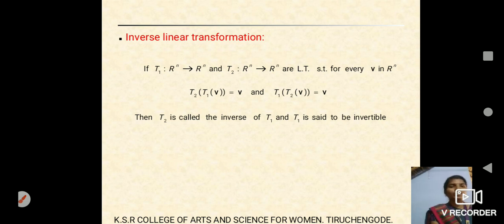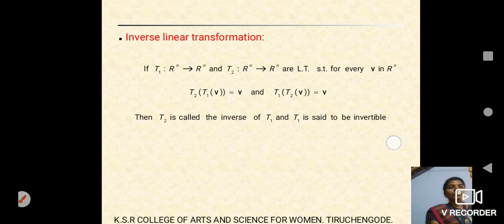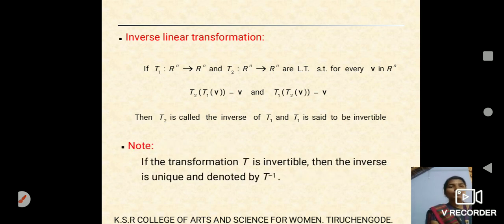Inverse linear transformation: consider two linear transformations T₁ and T₂. If T₂(T₁(v)) = v for all v in Rⁿ and T₁(T₂(v)) = v, then T₂ is called the inverse of T₁ and T₁ is said to be invertible. Note: if transformation T is invertible, then the inverse is unique and is denoted by T⁻¹.